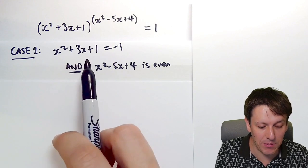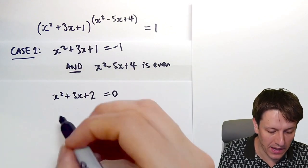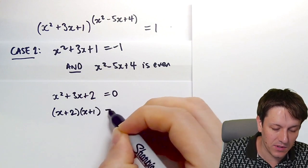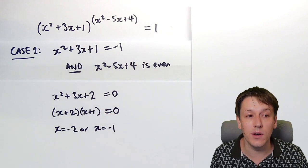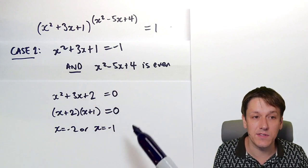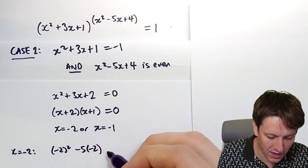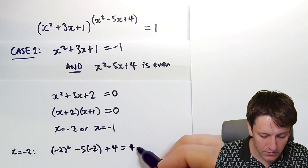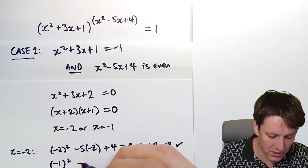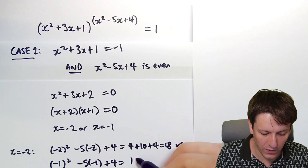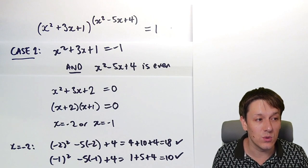In the second case, we solve x squared plus 3x plus 1 equals minus 1, giving x squared plus 3x plus 2 equals 0. This factorizes as (x plus 2)(x plus 1) equals 0, so x equals minus 2 or x equals minus 1. We need to check that x squared minus 5x plus 4 is even: for x equals minus 2, that gives 4 plus 10 plus 4 equals 18, which is even; for x equals minus 1, it gives 1 plus 5 plus 4 equals 10, also even. So both are genuine solutions.